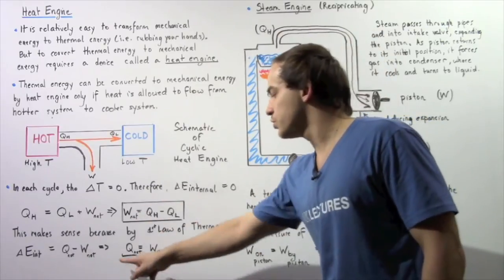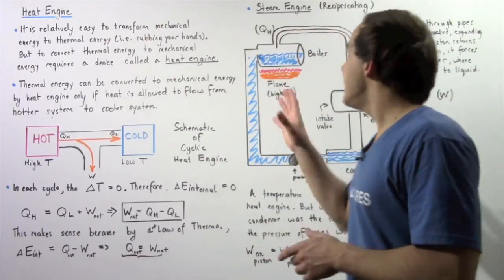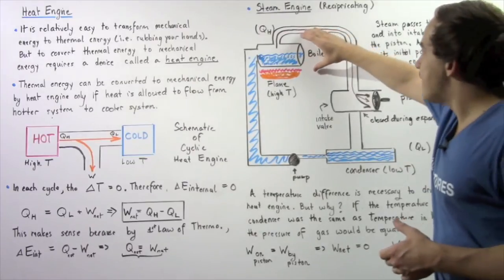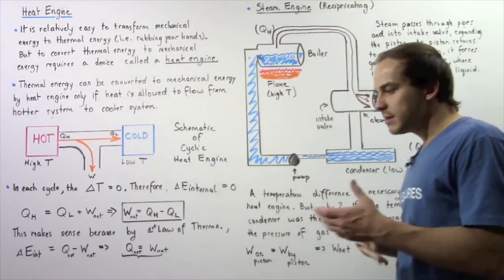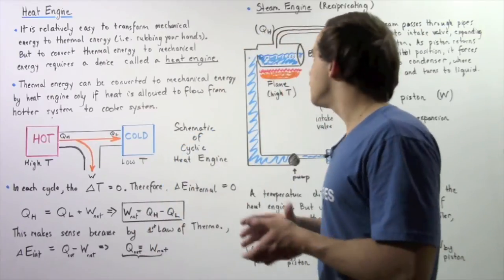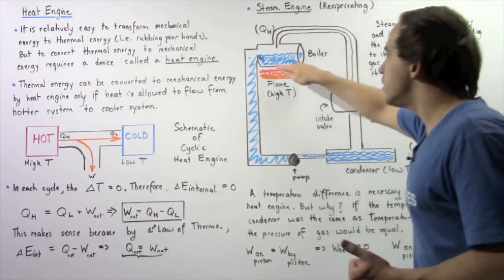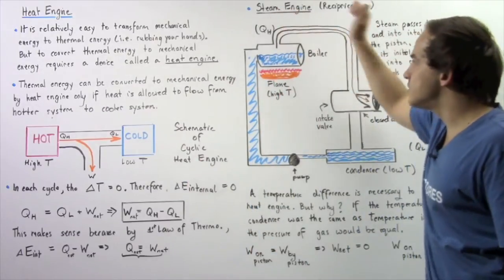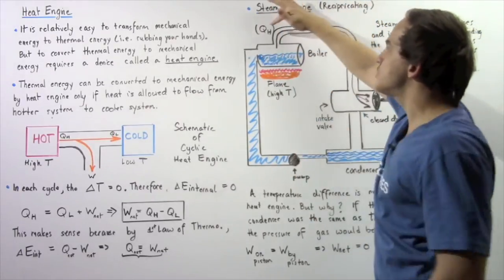There are many types of heat engines, and one is the steam engine. We'll discuss a reciprocating steam engine. We have a boiler containing a liquid such as water, and beneath the boiler a reaction takes place — for example, burning coal. A flame at high temperature transfers energy into the liquid, which begins to evaporate. Steam travels from the boiler into a pipe, and the energy that flows out is QH.